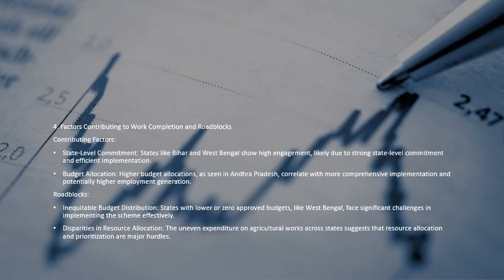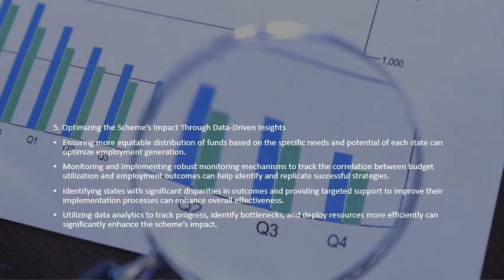Factors contributing to work completion include state-level commitment — states like West Bengal show high engagement due to strong commitment and efficient implementation — and higher budget allocation, which correlates with more comprehensive implementation. Roadblocks include inequitable budget distribution, where states with zero approved budgets face significant challenges, and uneven expenditure on agriculture work across states representing major hurdles.